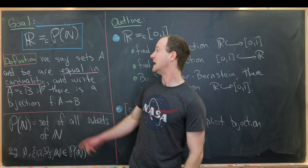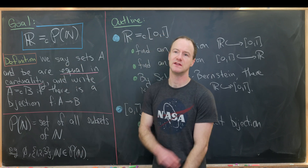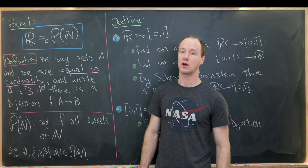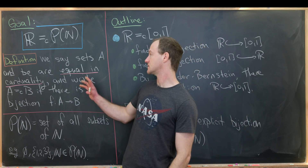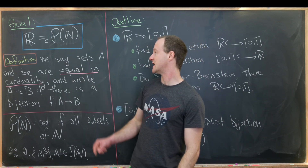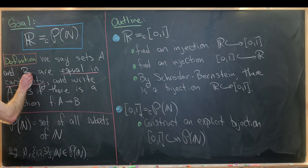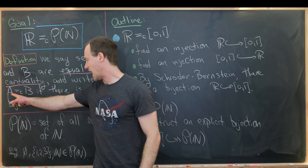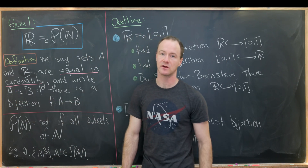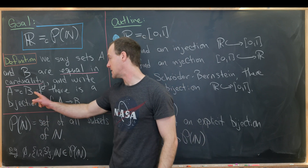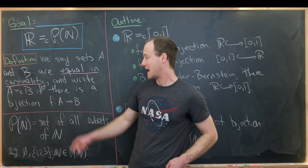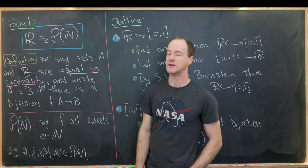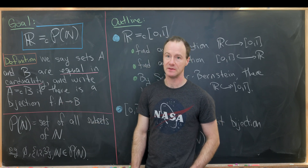Another thing to recall is the definition of what it means for two sets to be equinumerous or equal in cardinality. We say sets A and B are equal in cardinality — written A ≅_c B — if there is a bijection from A to B, in other words a one-to-one and onto map between A and B.